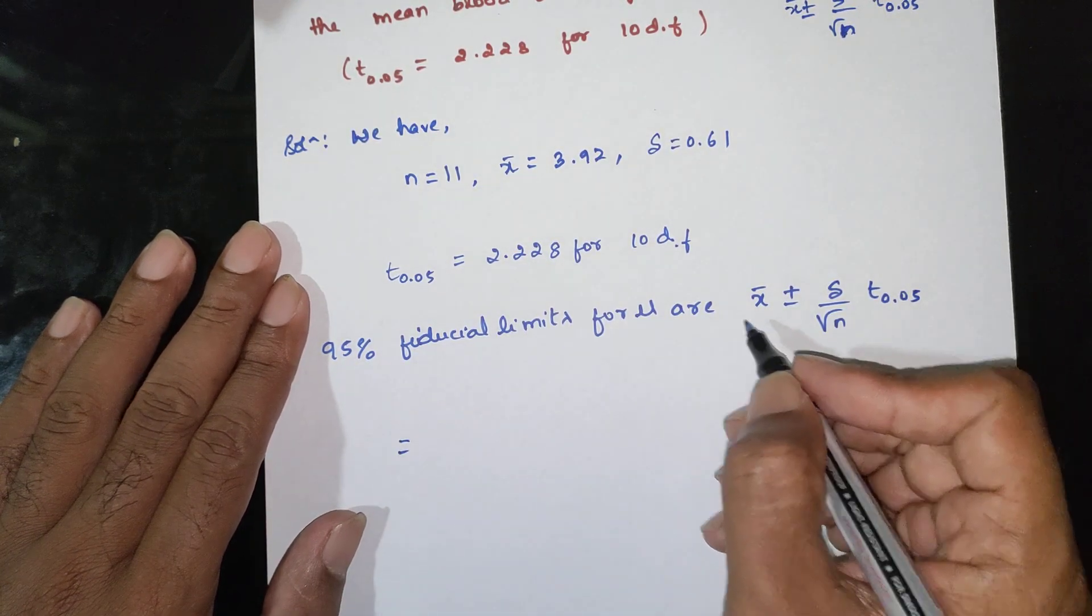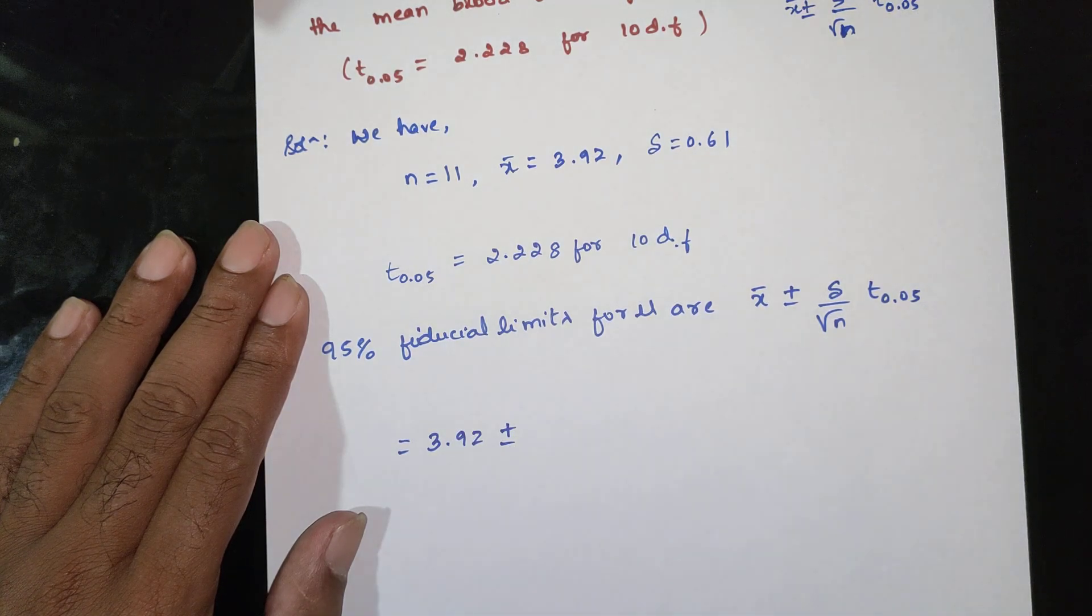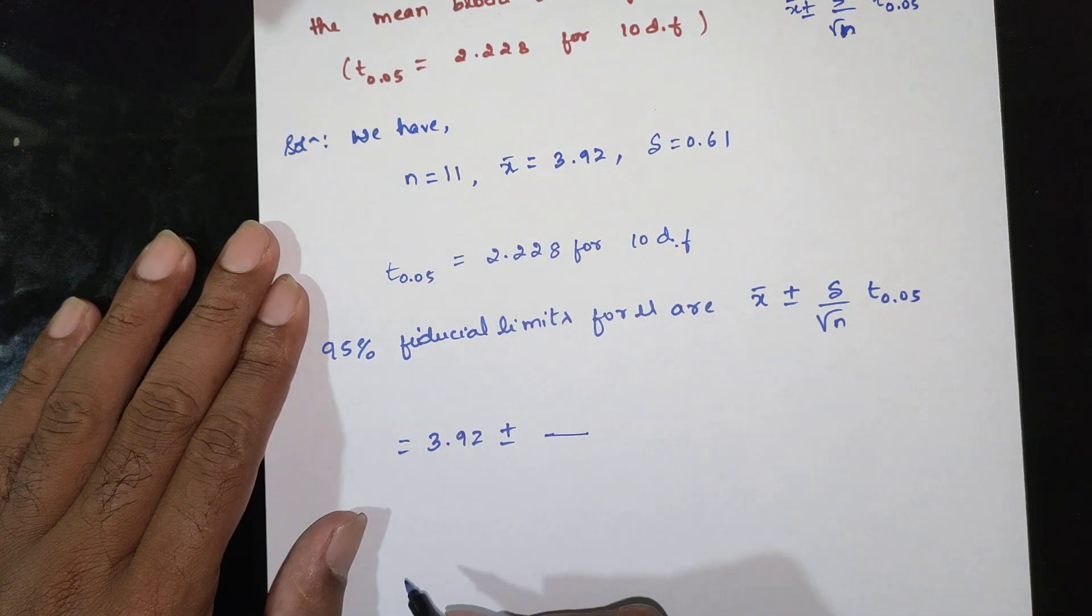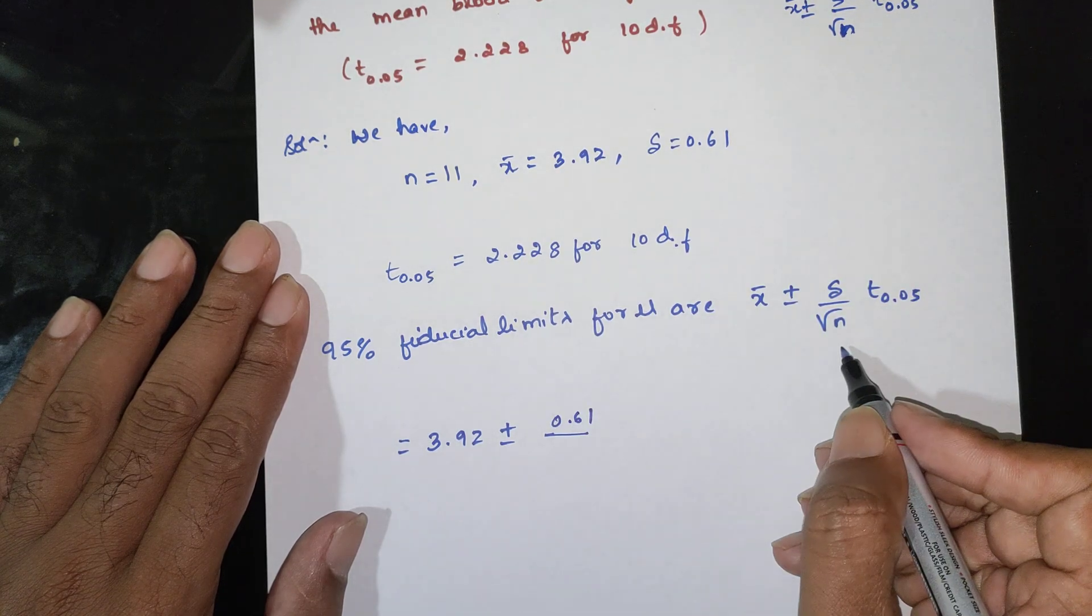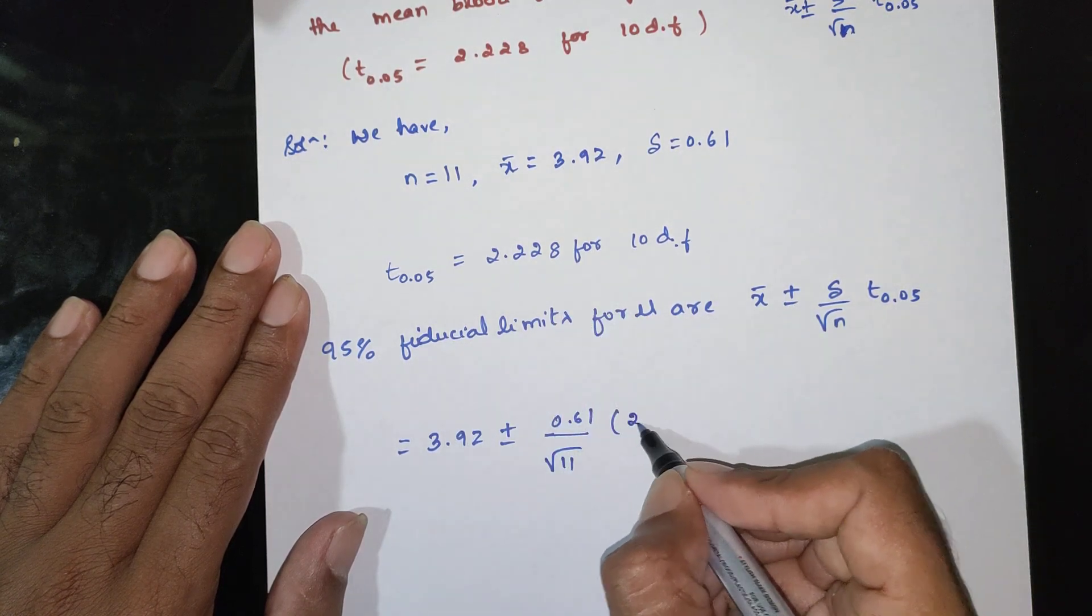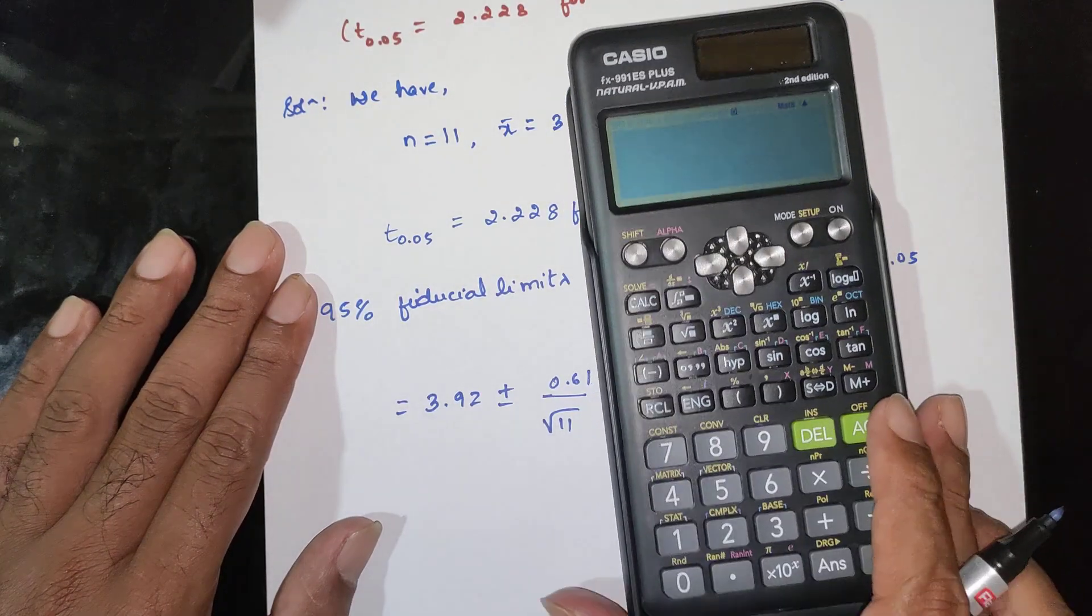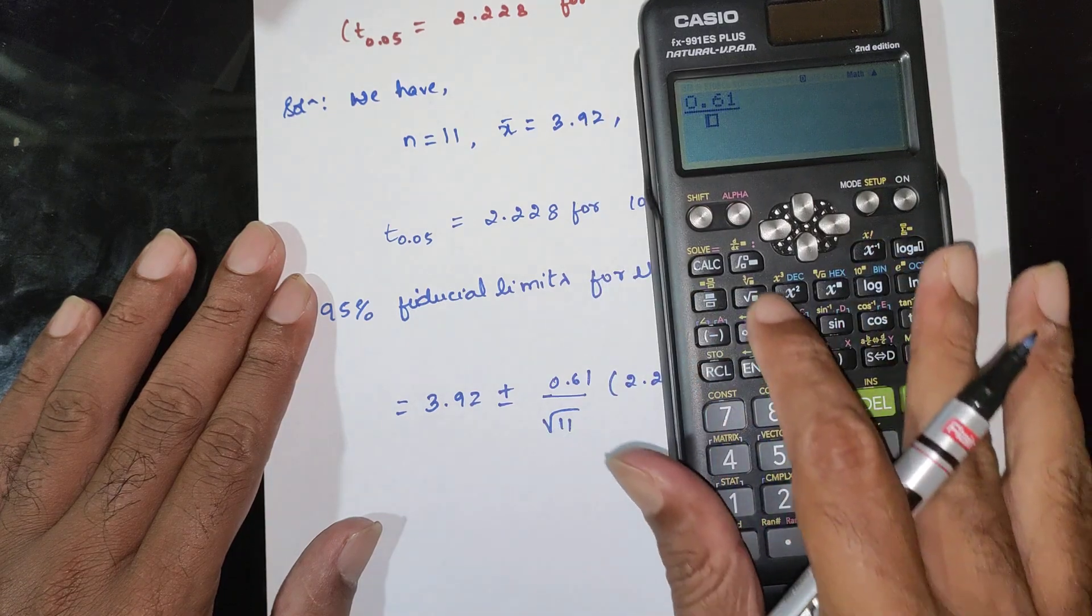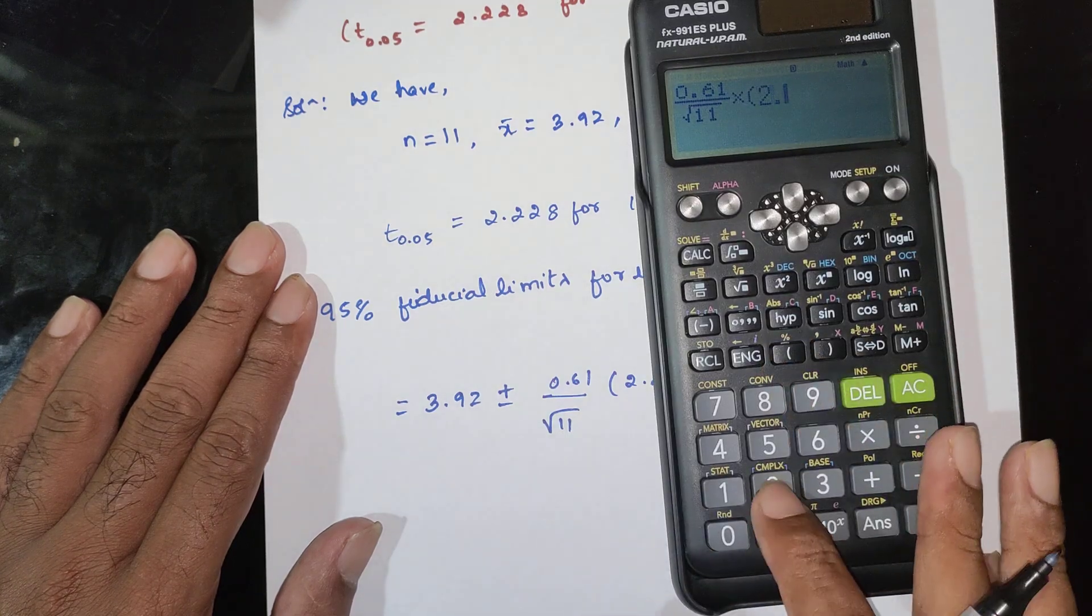We will substitute: 3.92 plus or minus 0.61 by root 11 times 2.28.